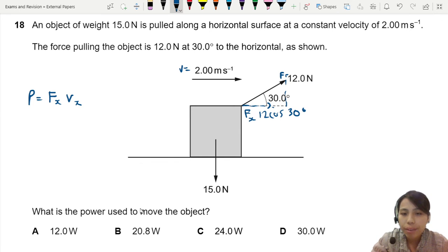Now only we can use this as the FX, the horizontal part of F, which is parallel with the velocity. Very good. Okay, let's multiply in. So this will have 12 cos 30 times 2.